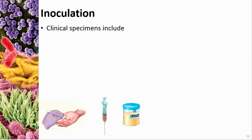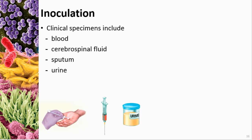Clinical specimens can be blood, cerebral spinal fluid (CSF — which is the fluid around your brain and spinal cord), spit, urine, feces, or disease tissue. If you have an open wound that's infected and isn't healing, or some sort of necrotic disease, they may take a sample of that tissue and analyze it to determine what is infecting you.